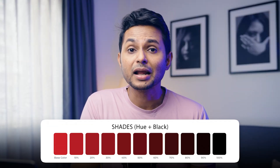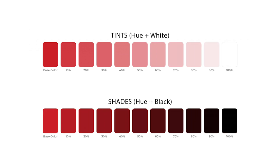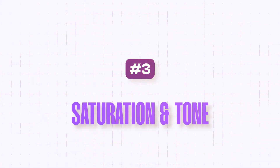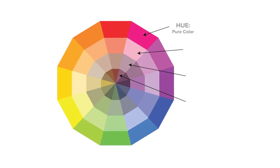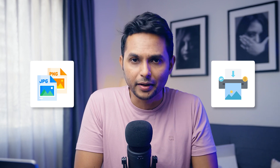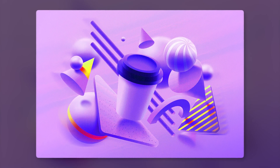Number two, tint and shades. Tint is a mixture of a color with white, while shades are a mixture of colors with black. Tint increases the lightness of your color and shade increases the darkness. Number three, saturation and tone. Saturation is the intensity of the color itself. When a color is 100% saturated it appears as the original, while no saturation is just gray. As you move into the center of the color wheel, colors are less and less saturated. Brightness and low saturation creates a calm feeling, whereas high saturation creates a strong feeling.